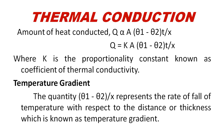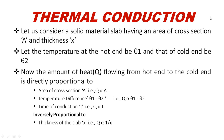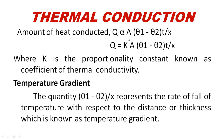For thermal conduction through a solid material slab of area A and thickness X, with one end at temperature theta 1 and the other at theta 2, the heat transfer Q is directly proportional to area A, temperature difference, and time T, and inversely proportional to thickness X. So Q equals K·A·(theta 1 minus theta 2)·T divided by X, where K is the thermal conductivity constant and (theta 1 minus theta 2)/X is the temperature gradient.